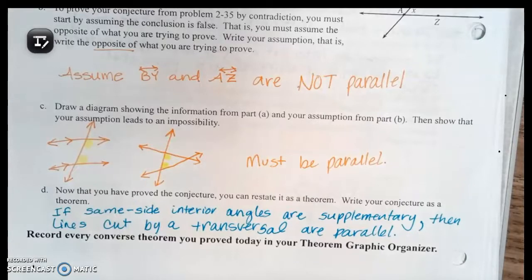In our conclusion for part D it says now that you've proved the conjecture, you can restate it as a theorem. Write your conjecture as a theorem. You would say something like: if same side interior angles are supplementary, then the lines cut by a transversal are parallel. And then we're done.